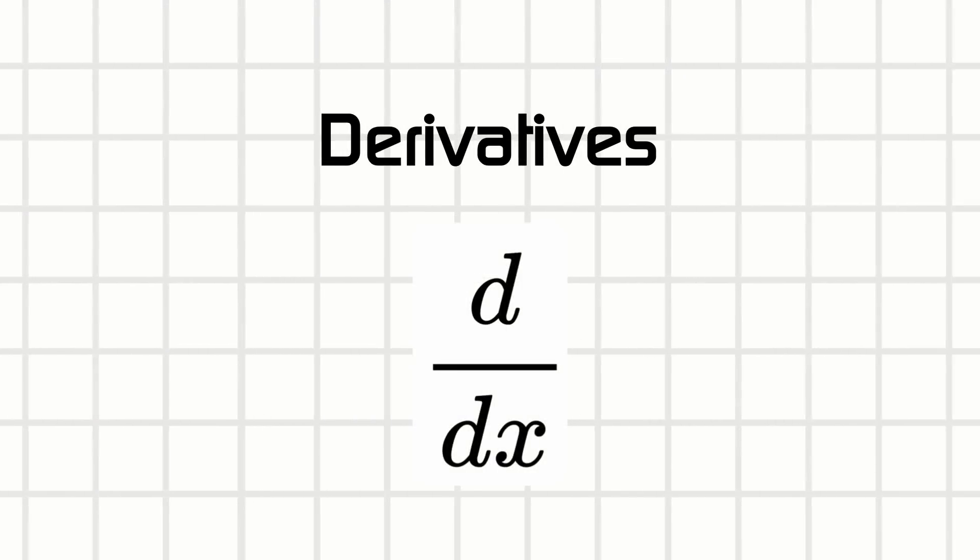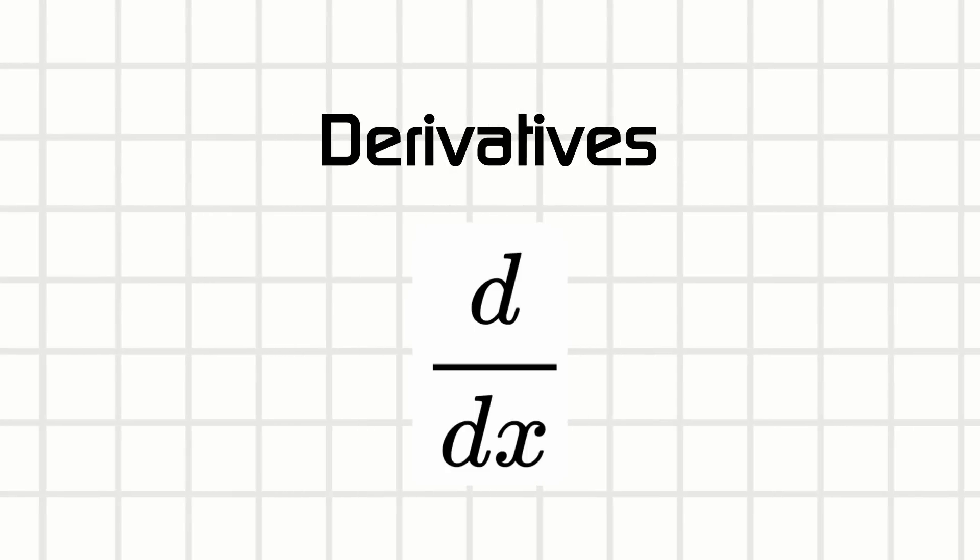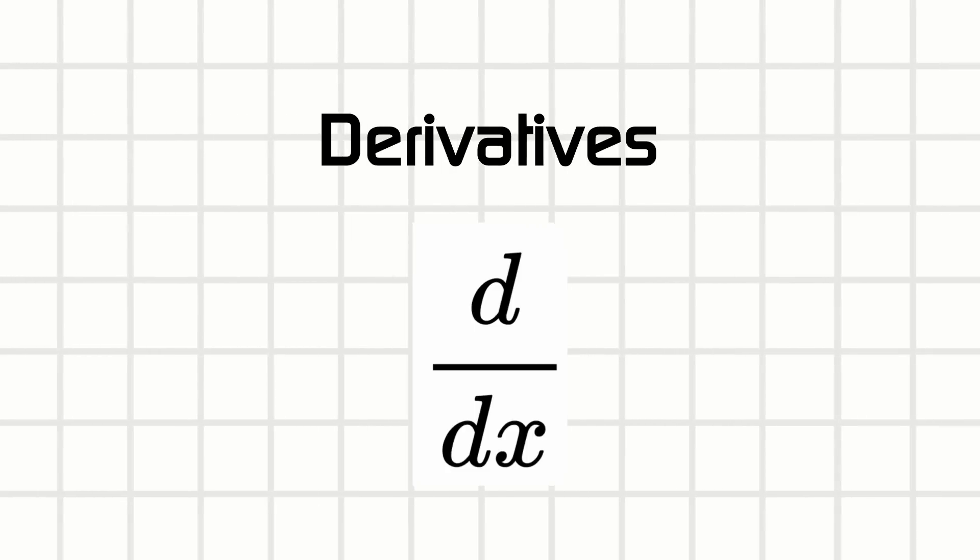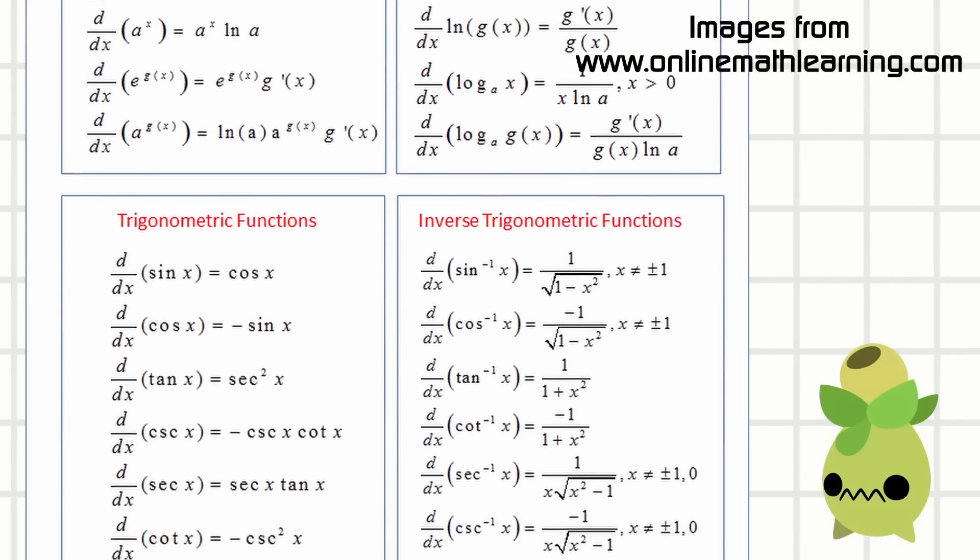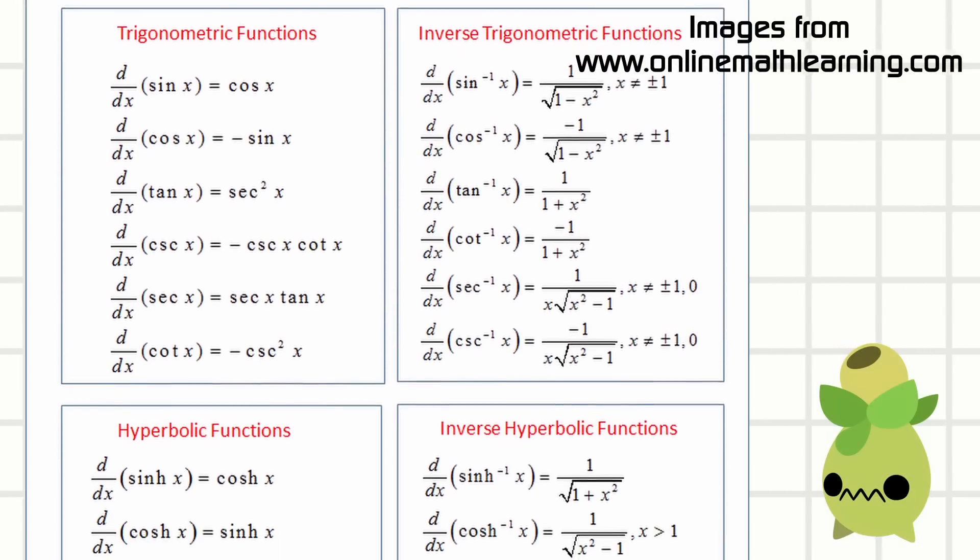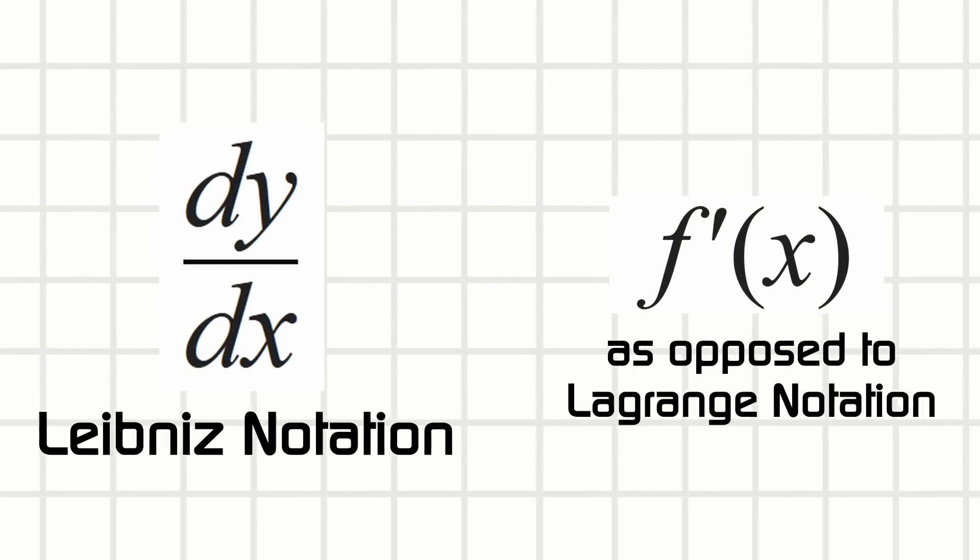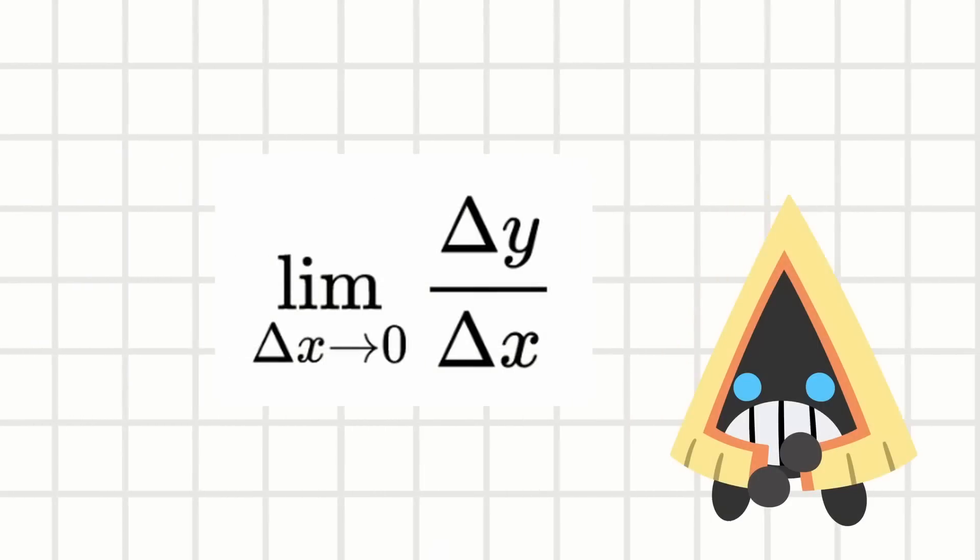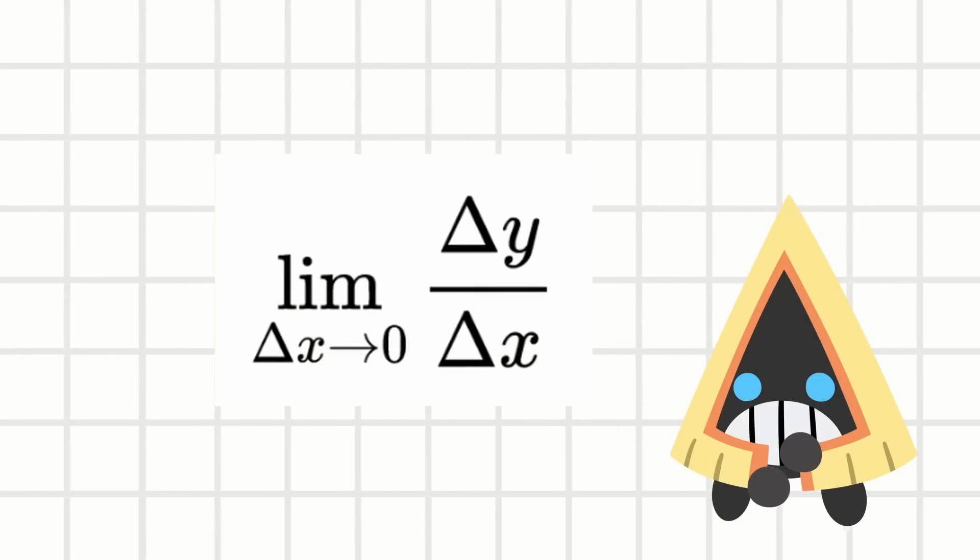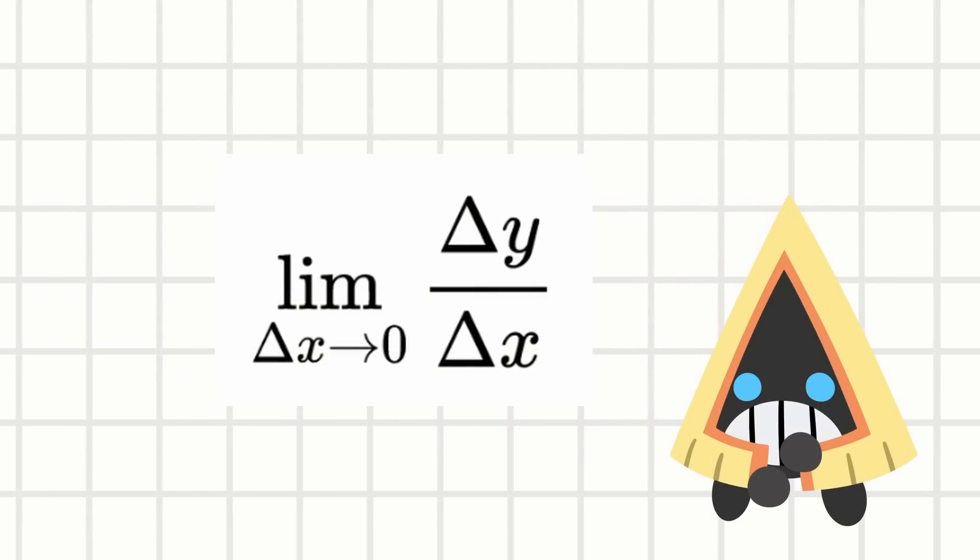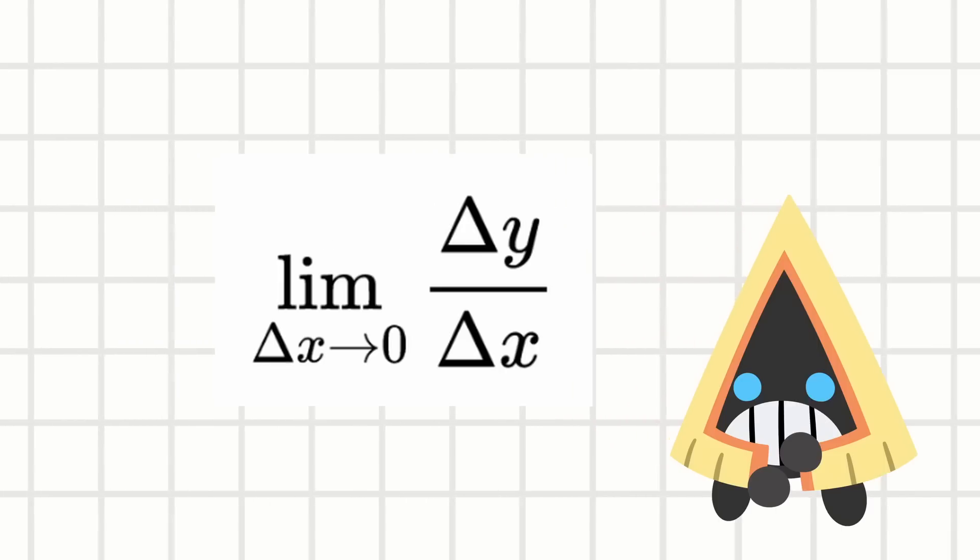There's a lot of rules you can follow to find a derivative of a function. Power rules, logarithm rules, trigonometry. But what does all this work for anyways? Well, derivatives are often written like this. D over Dx, but this basically means delta over delta x where delta means change. It's the change of this function over the change of the x axis.